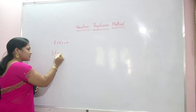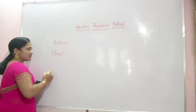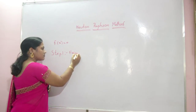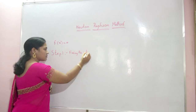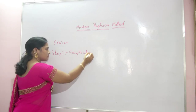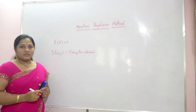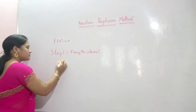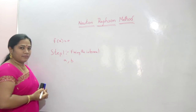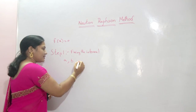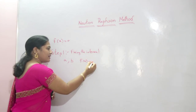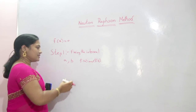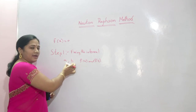Step 1 is fixing the interval. Here we choose two points A and B such that f(A) and f(B) are of opposite signs. Then the root lies between A and B.